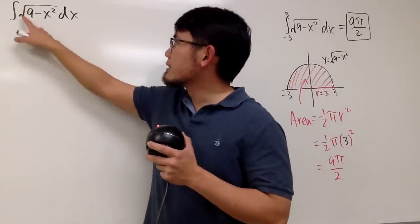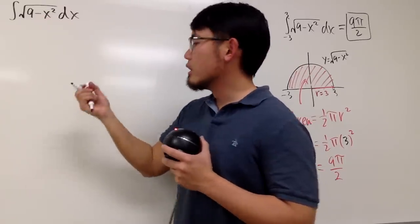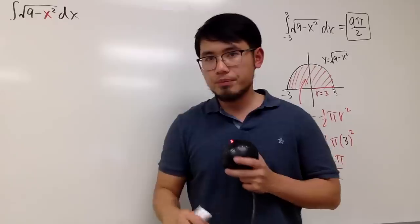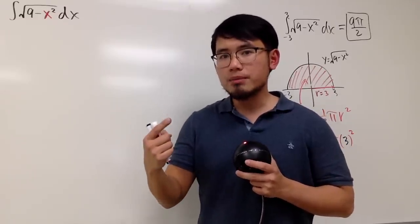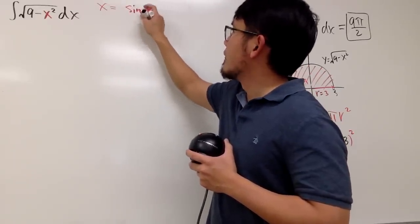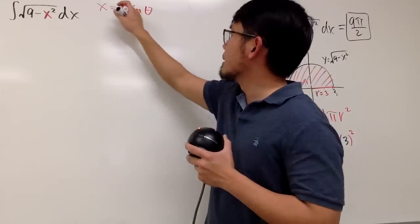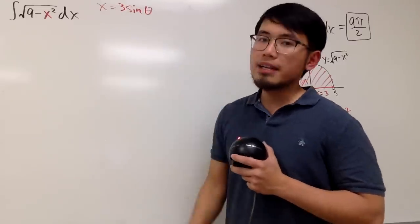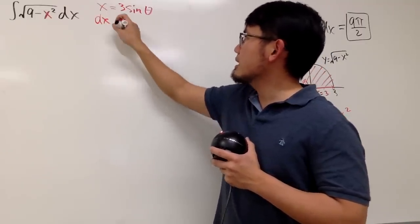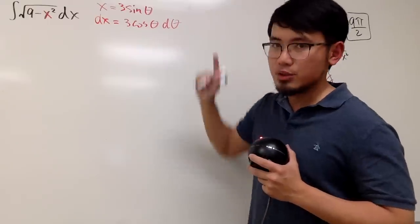Here we go. We have the square root of 9, which is the same as 3 squared, and then minus x squared. We have a number minus x squared, and we know 1 minus sine squared gives us cosine squared. So I will take x to be 3 sine θ — we'll go to the theta world. Since this is a 9, which is 3 squared, we multiply by 3. Differentiating both sides: dx equals 3 cosine θ dθ.